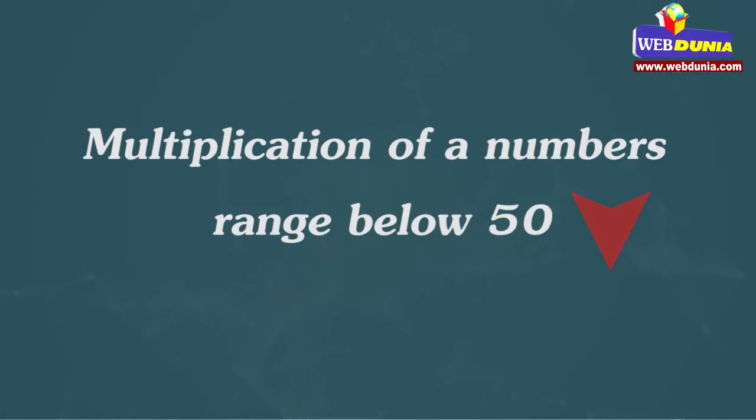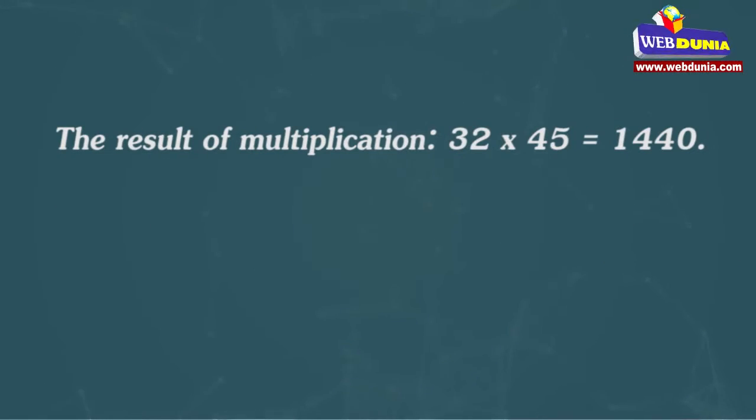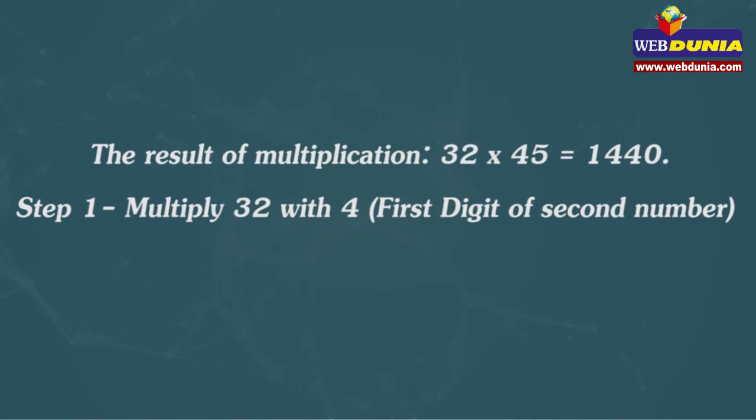Trick 1: Multiplication of a number range below 50. The result of multiplication 32 multiplied by 45 equals 1440. The method of solving it is Step 1.